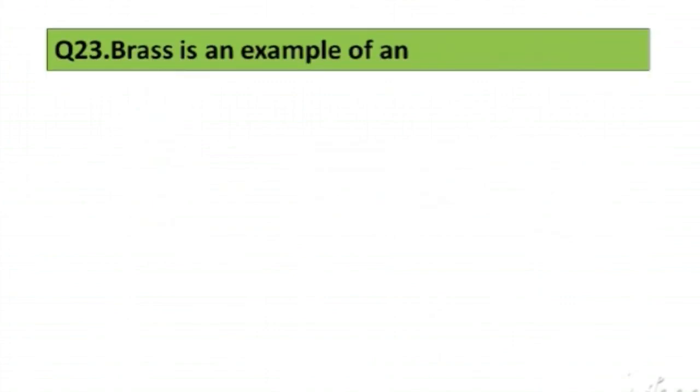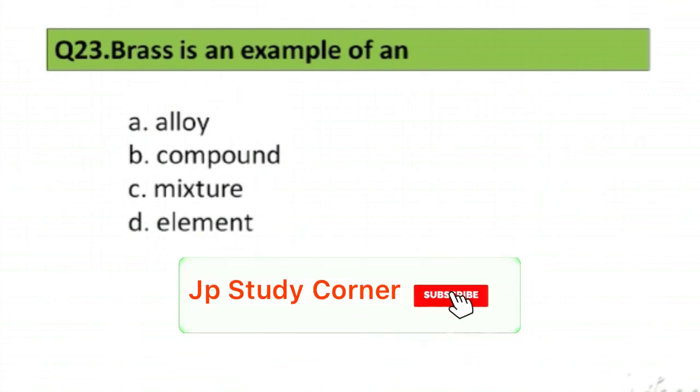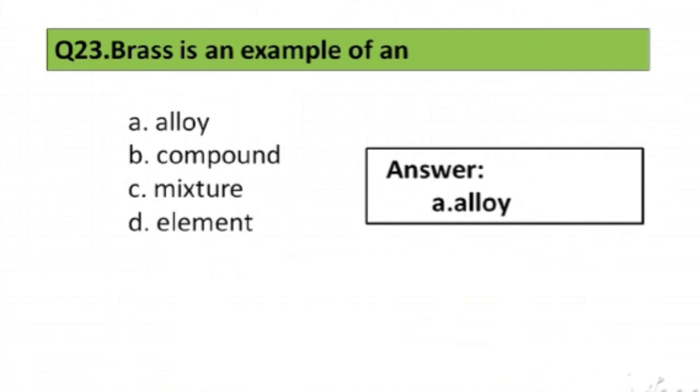Question number 23. Brass is an example of: A. Alloy, B. Compound, C. Mixture, D. Element. The right answer is option A, Alloy.